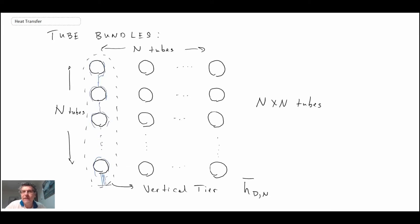We would have the convective heat transfer coefficient for n tubes in the vertical direction. And in order to compute that, what we do, we begin by computing the convective heat transfer coefficient for a single tube. And then we multiply it by the number of tubes in the vertical direction, raised to the power minus one-sixth.